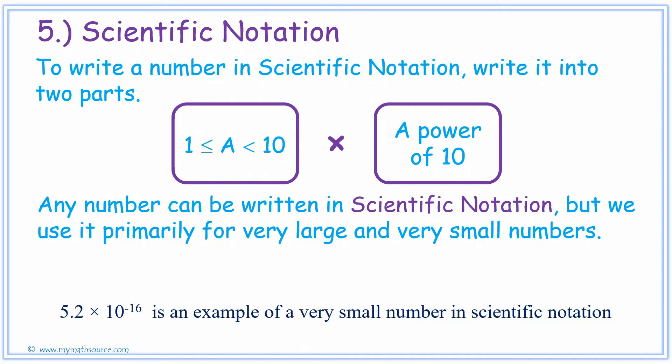Here's an example of a really small number in scientific notation. Notice how the number 5.2 is between 1 and 10, then it's multiplied by a base 10. Remember, the negative power means that it's a small number.